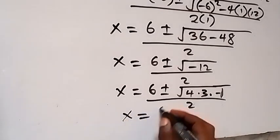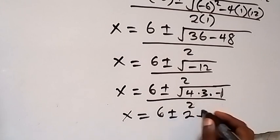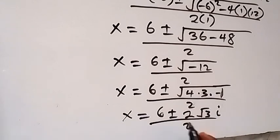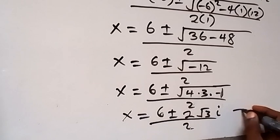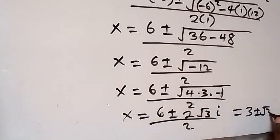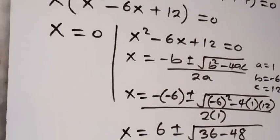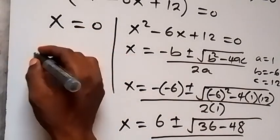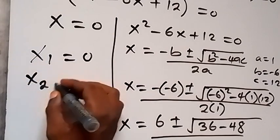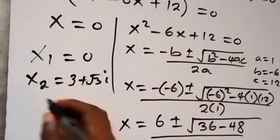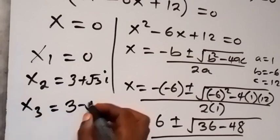This becomes x equals to 6 plus or minus 2√3·i, then divide by 2. So this can be written as x equals to 3 plus or minus √3·i. From here we have two complex solutions. We have x₁ equals to 0, x₂ equals to 3 plus √3·i, and x₃ equals to 3 minus √3·i.